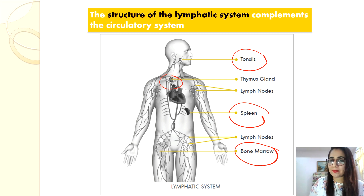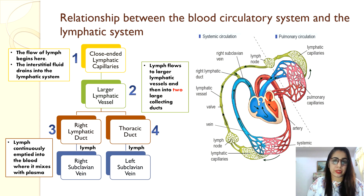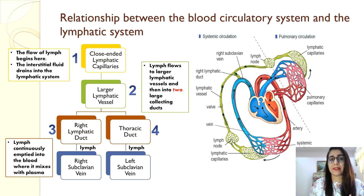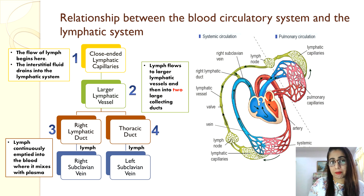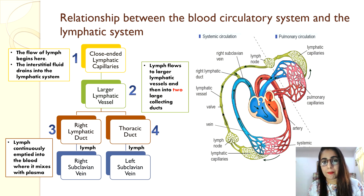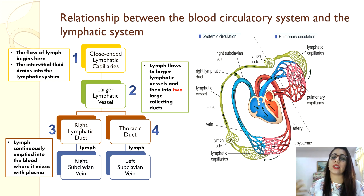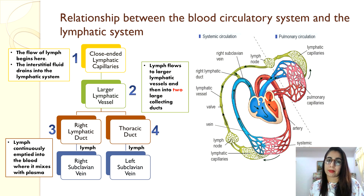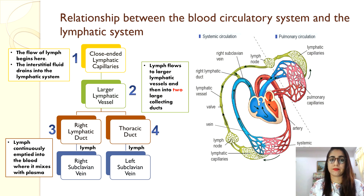Regarding the relationship between the blood circulatory system and the lymphatic system: the thoracic duct delivers its contents into the left subclavian vein, while the right lymphatic duct transports lymph into the right subclavian vein. Lymph collected from the whole body flows back into the blood circulatory system. The flow begins in the lymphatic capillaries, then into larger lymphatic vessels, then into the two large collecting ducts, and finally into the subclavian veins — making it part of the circulatory system.